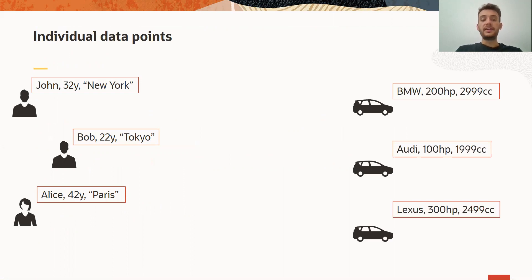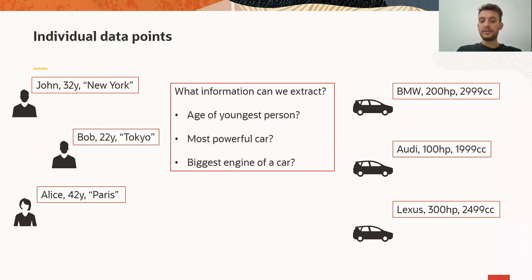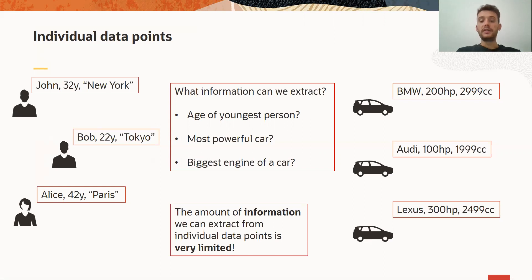Only having these individual data points, we can ask very simple questions. For example, we can ask what is the age of the youngest person, what is the most powerful car in this data set, and what is the car with the biggest engine. So by only having individual data points, no connections between them, the set of questions that we can ask is very limited. This also means that the information someone can extract out of these individual data points is limited.